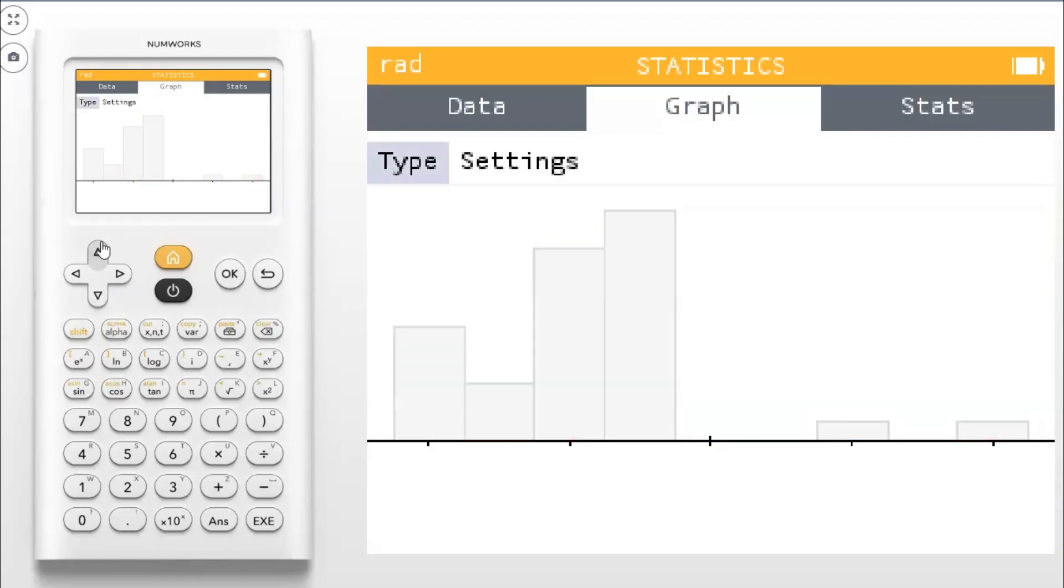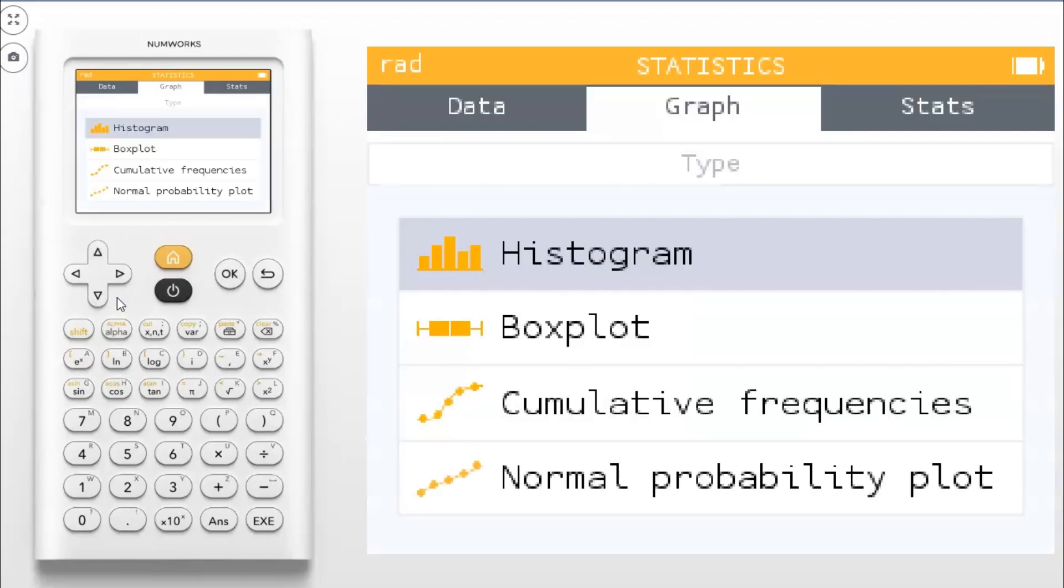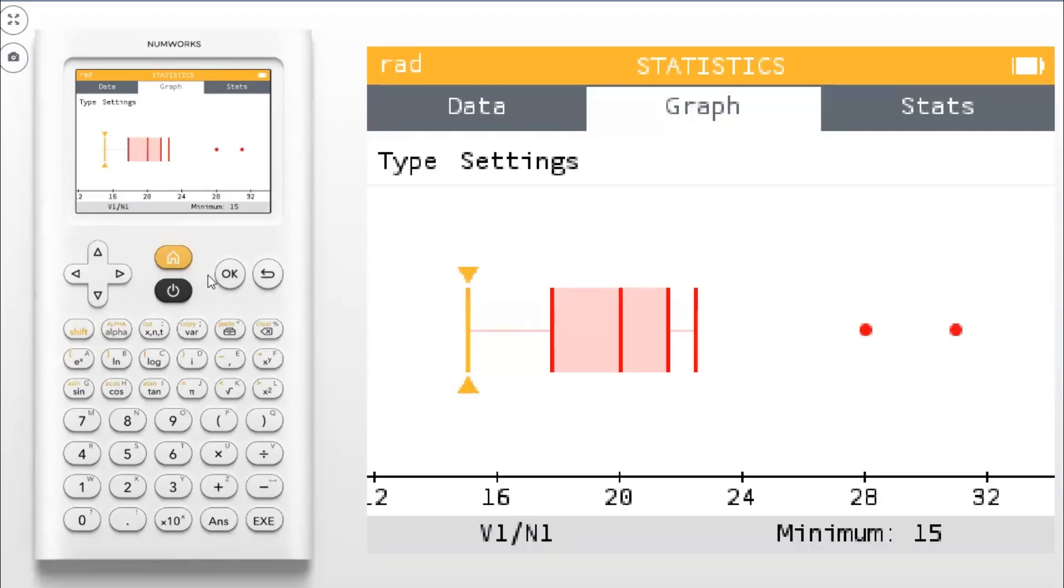And you could even change the type of graph because you're probably going to learn about box plots as well. And boom, there's a box plot. You could scroll through and see Q1, Q3, the median, the min, the max, outliers are even marked there. So it's really cool.